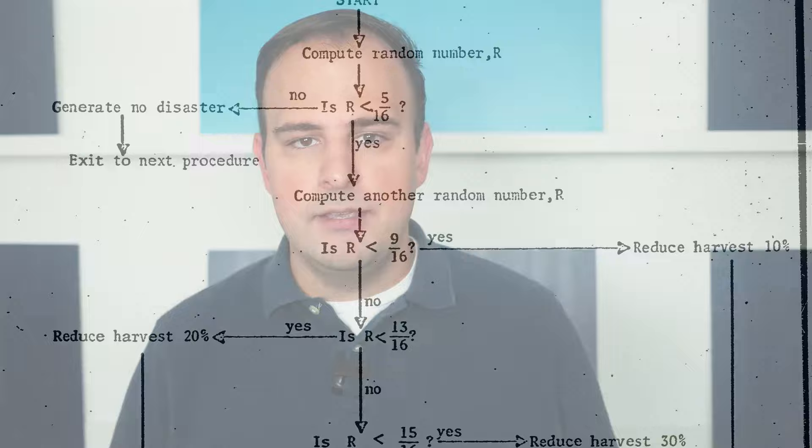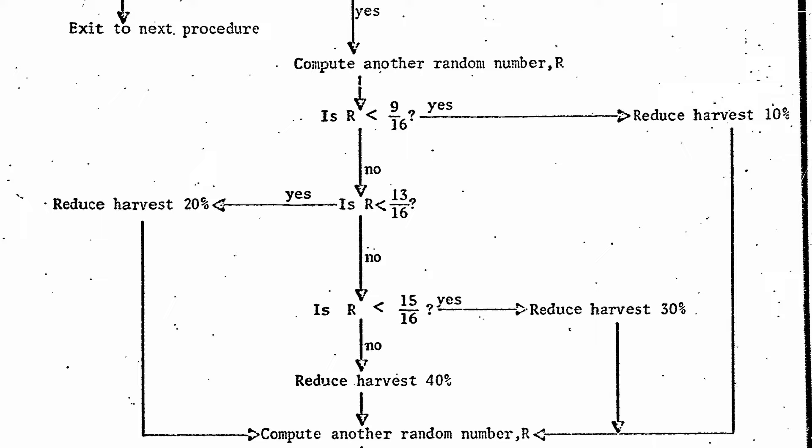As the game progressed, it became more complex. For example, there might be a complication with the crop, or the player would have to account for and deal with a growing population, or lack of water and irrigation. Here's the flowchart the game used to determine crop failure, or disasters which included locusts, flood, or the wrath of God.